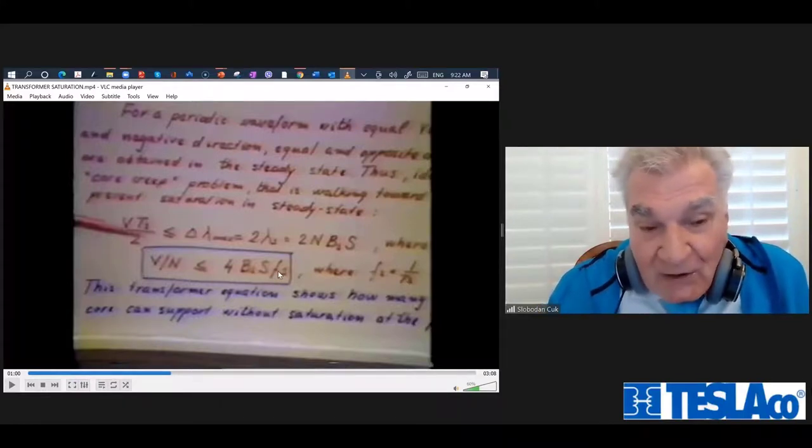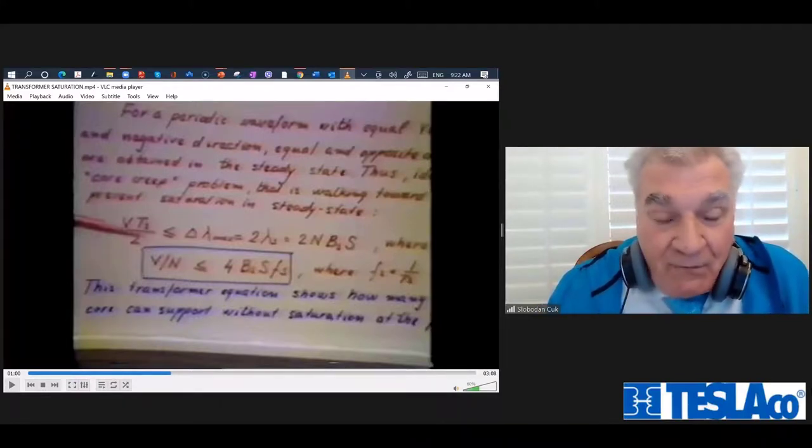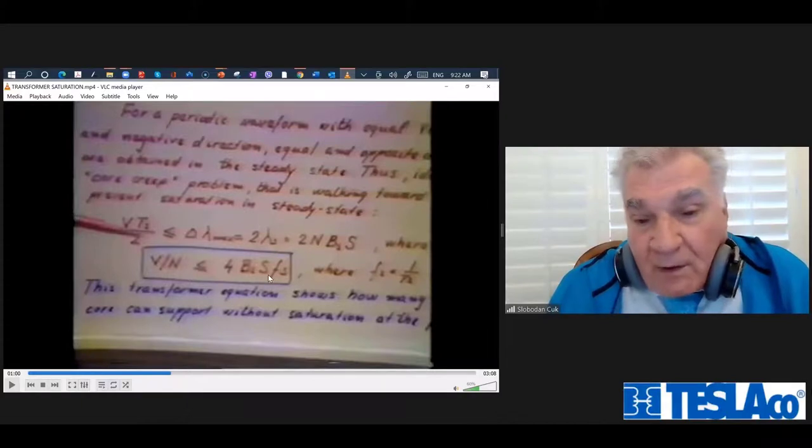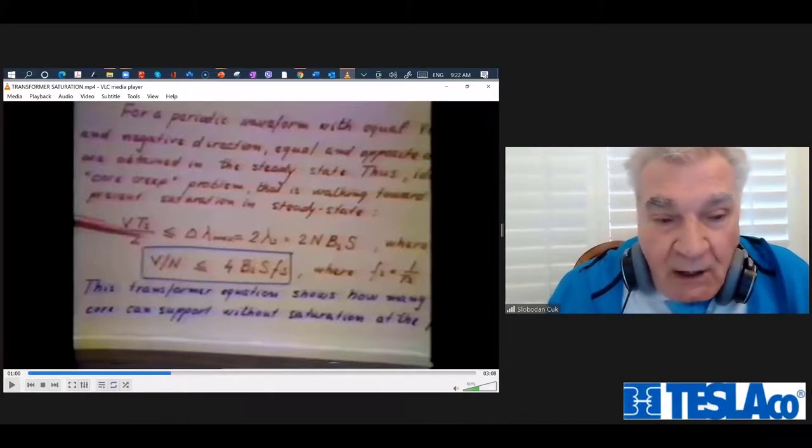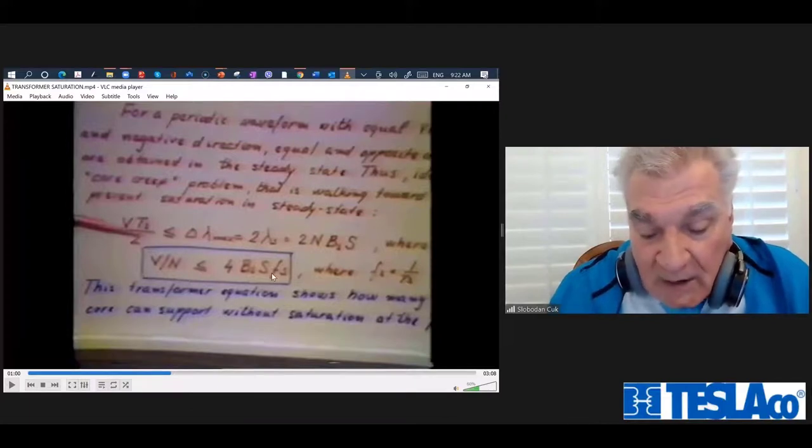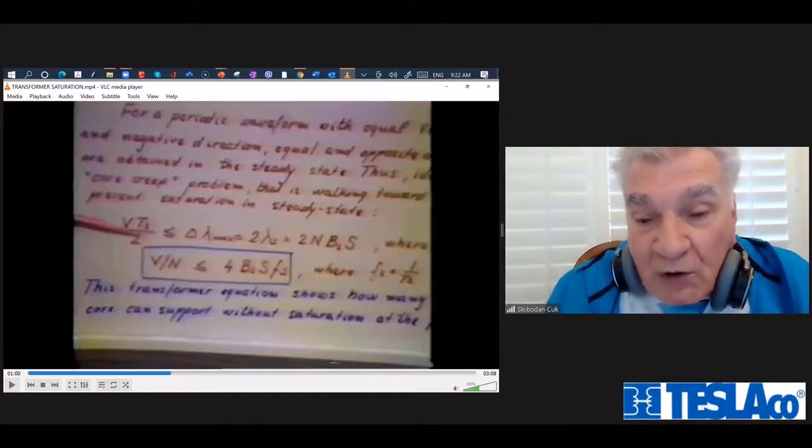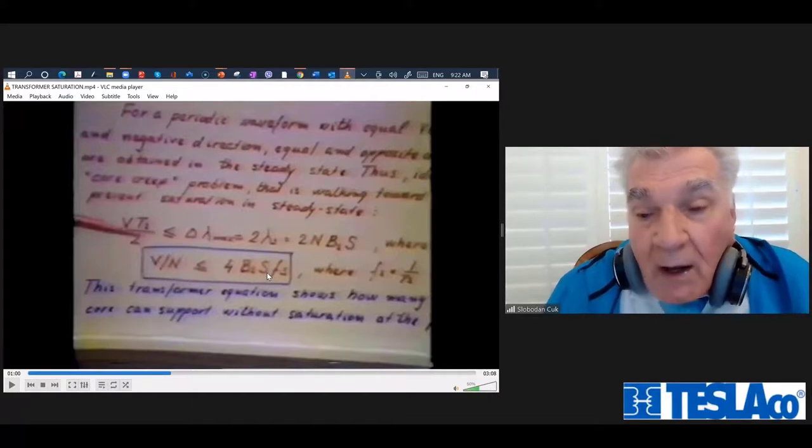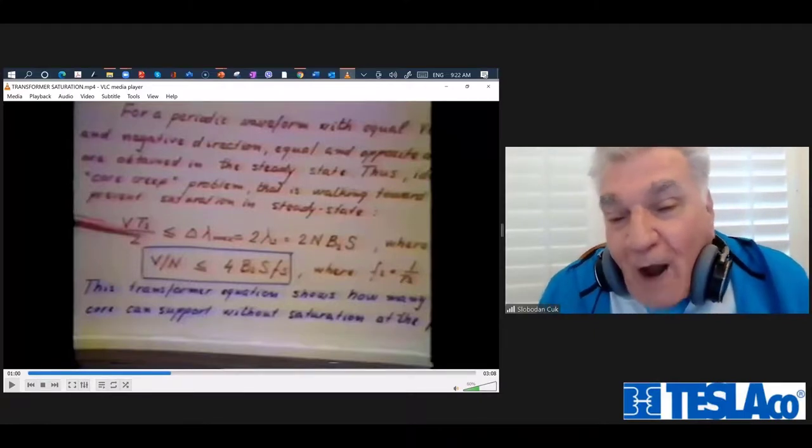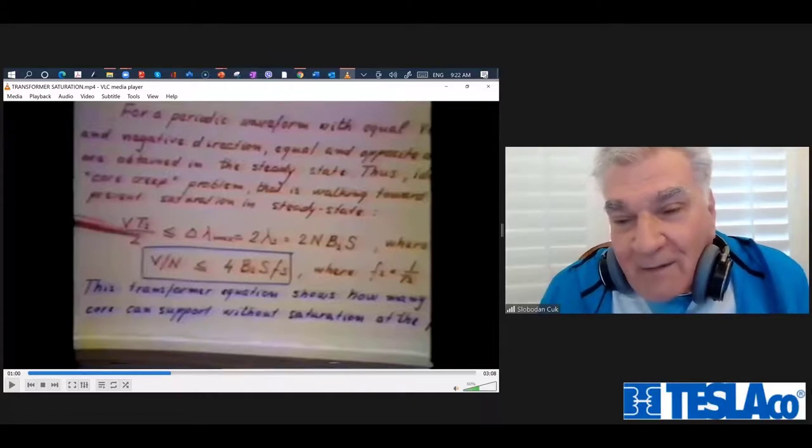Most ferrite cores can be driven full flux from 0 to 300 millitesla in one direction and 0 to minus 300 millitesla in the other direction without getting huge core losses. Core losses will be still negligible. But the size will be reduced 1,000 times. Did we manage to do that? Absolutely not. We are far away from it.